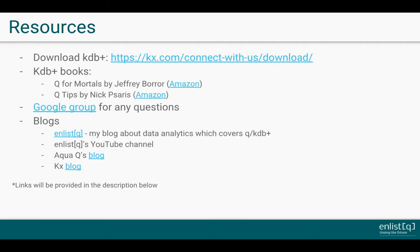Finally, before we wrap up, I would like to cover different resources available to you if you're interested in learning Q and KDB. First, go ahead and set up Q KDB 64-bit version using Conda — we have a video tutorial on how to do that. You can also download KDB directly from the URL listed on this slide. As of 2018, there are two books available on KDB. Q for Mortals is a great one, which is what I used when I was first learning KDB. In 2015, Nick wrote Q Tips, which from what I've heard is a very helpful book as well.